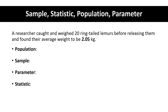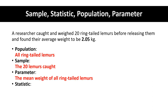A researcher caught and weighed 20 ring-tailed lemurs before releasing them and found their average weight to be 2.05 kilograms. The population would be all ring-tailed lemurs. The sample was the 20 caught. The parameter would be the mean weight of all ring-tailed lemurs. The statistic would be the sample mean weight of 2.05 kilograms.